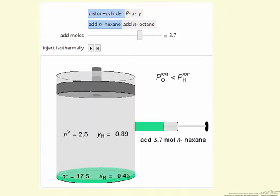We're given the number of moles in the liquid phase and the vapor phase, and then the mole fraction in this case of hexane.